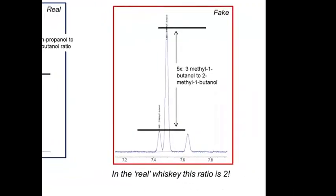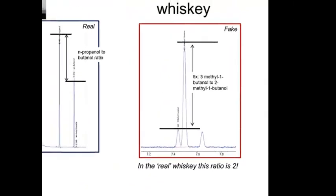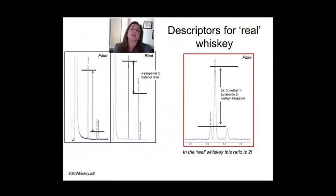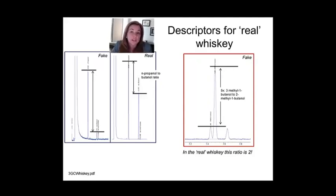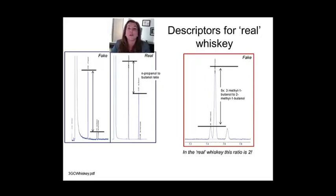Another interesting example involves a ratio of alcohols that are present. A lot of the approach to authenticating something based on these very complex GCMS profiles is really a game of pattern recognition. This is an extra credit part — you don't have to read about the authentication and GCMS fingerprinting, but it's a pretty fascinating area. If you want extra credit, you'll need to propose a reasonable way to authenticate that the chocolatier is actually buying Criollo chocolate.